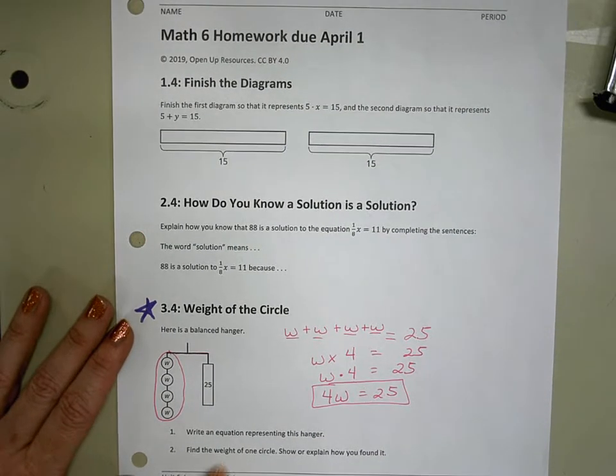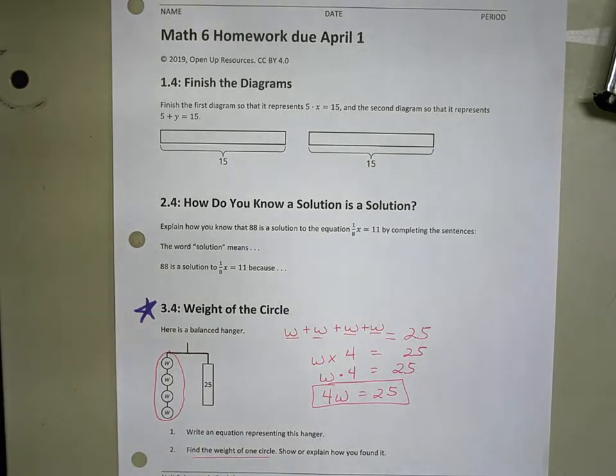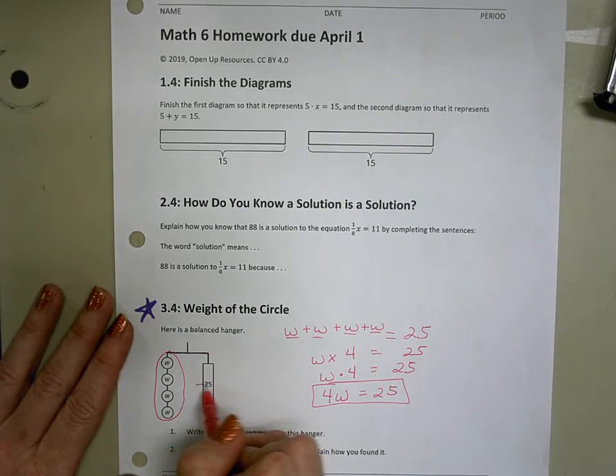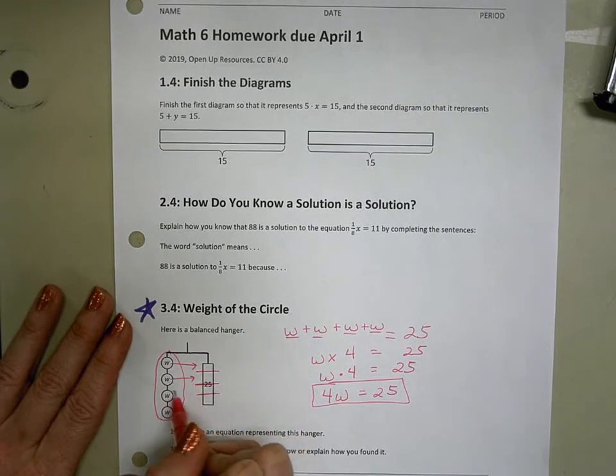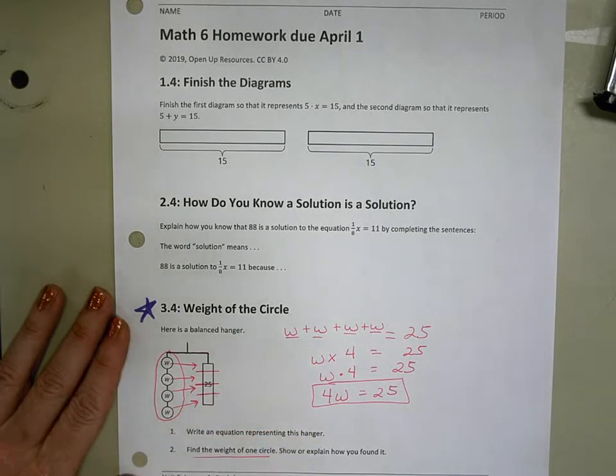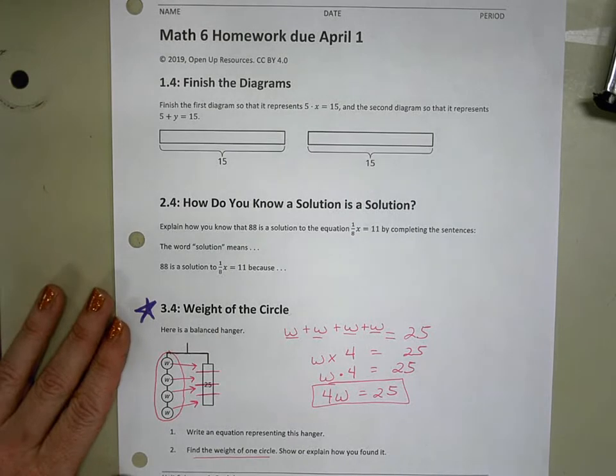And now we're going to find the weight of one circle. So a couple of ways we could do this, right? One, maybe we're going to use our diagram. We could cut it in half and then cut it into fourths to try to figure out what W is going to be equal to. It's going to be one of those fourths.